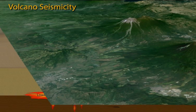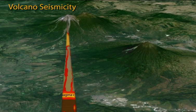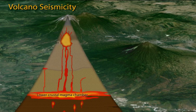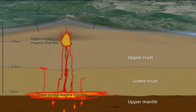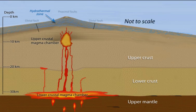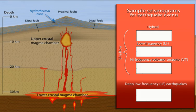Let's zoom in closer to show how moving magma and volcanic gas and fluids trigger earthquakes as they force their way up through the crust into shallow underground fractures, causing faults to move and cracks to vibrate.